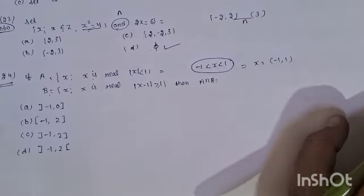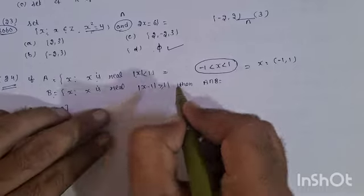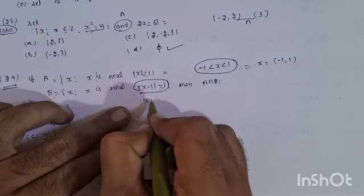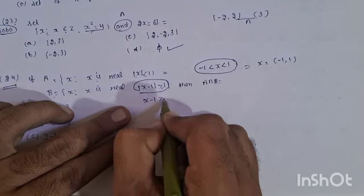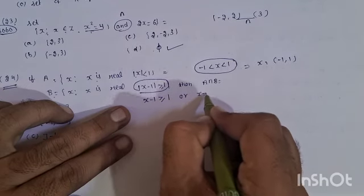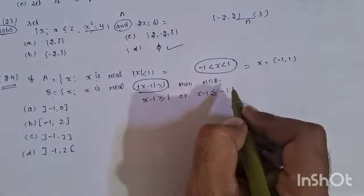Set B has modulus greater than 1. In this condition, X minus 1 is greater than 1 and X minus 1 is less than or equal to minus 1.